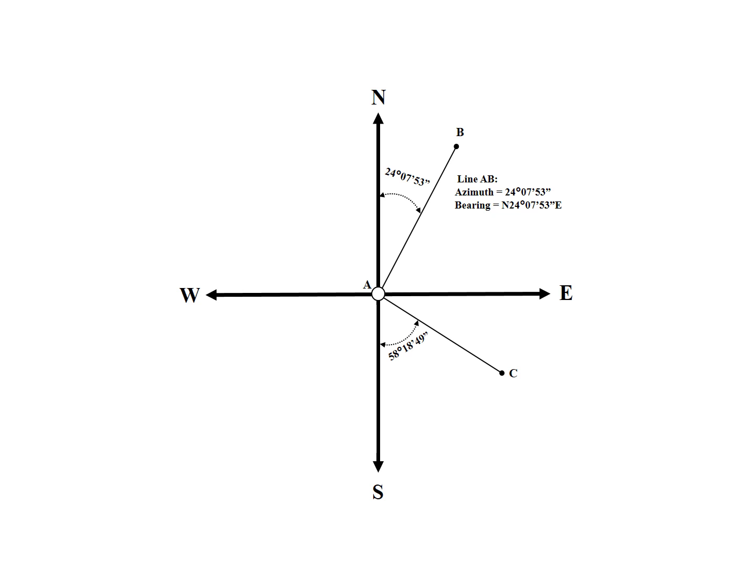Now looking at line AC. The given angle SAC is the angle measured from south of 58 degrees, 18 minutes, 49 seconds. Therefore, the azimuth can be calculated by subtracting this angle from 180 degrees. The resulting azimuth of line AC is 121 degrees, 41 minutes, 11 seconds. The bearing of line AC is referenced from south towards the east as south 58 degrees, 18 minutes, 49 seconds east.